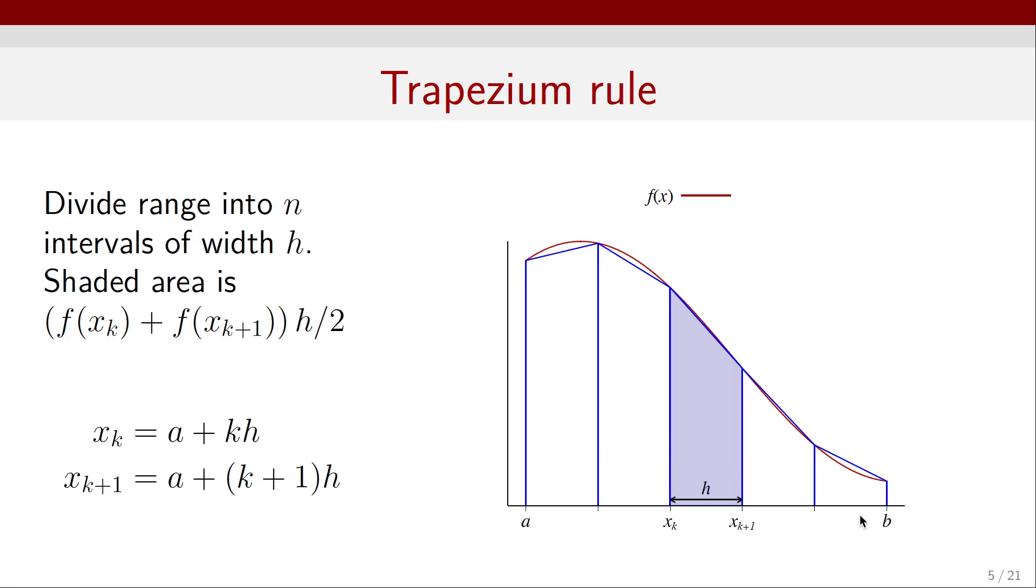So that divides the range from a to b into n intervals, each of them has a width h. We can look at this here. Each of those shapes is a trapezium, and we know from geometry how to calculate the area of a trapezoid. The area is the small base, f of k plus one, plus the large base, f of k, times the height h divided by two.